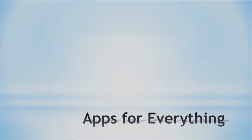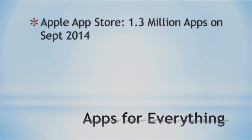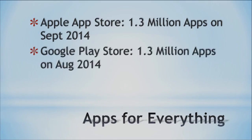You've heard this saying before — there's an app for everything. And this kind of does prove it. As you can see on the Apple App Store, we have about 1.3 million apps as of September 2014, and Google Play has the same number as of August 2014. So really, there is an app for everything — 1.3 million apps is a lot. If you're looking for a specialized application for your tablet or smartphone, more than likely you'll be able to find it in the App Store for your device.